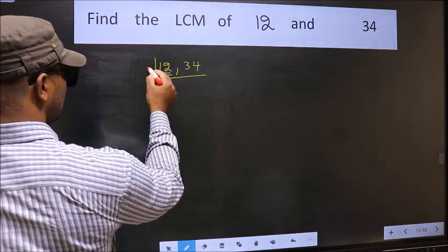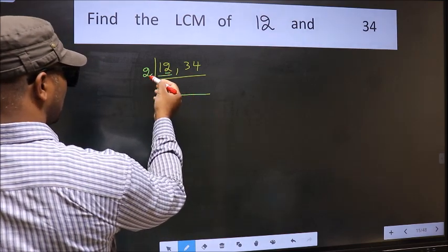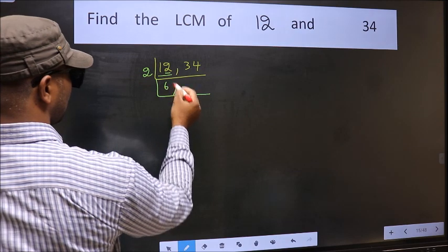Now, 12. When do we get 12 in 2 table? 2, 6, 12. Now, the other number 34.